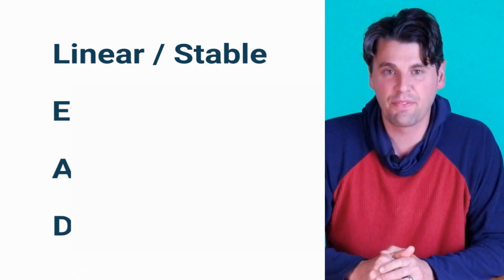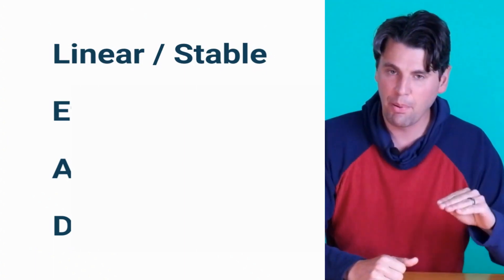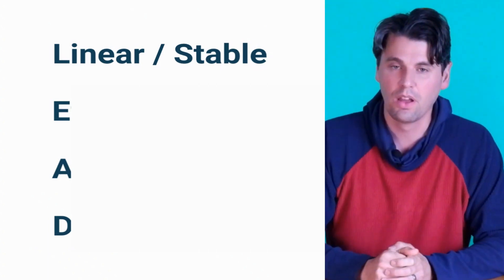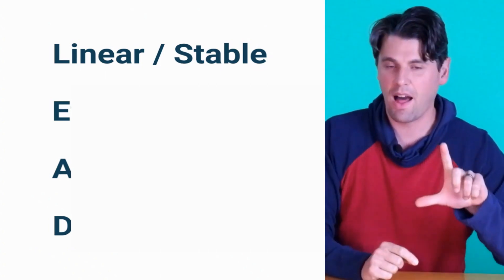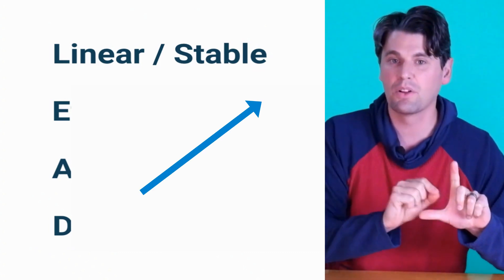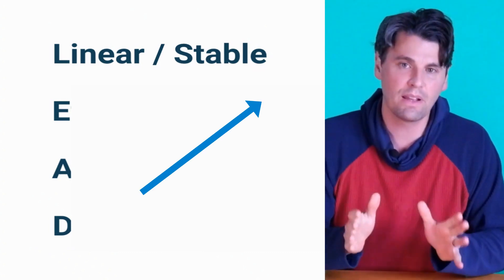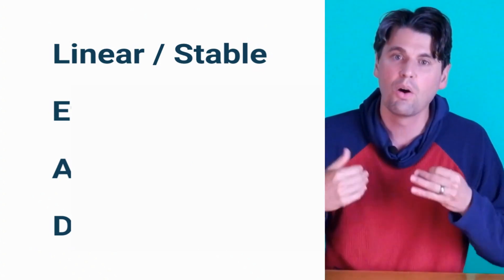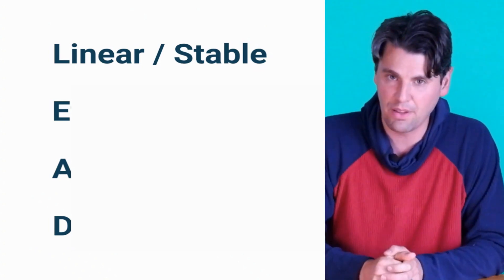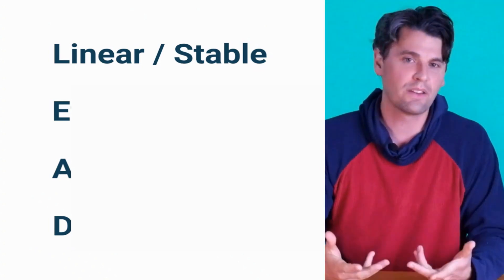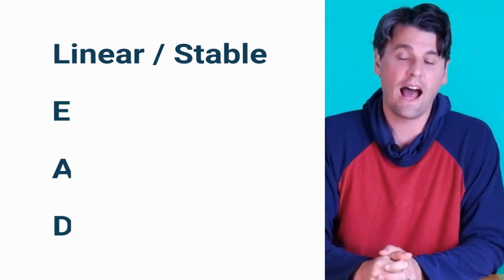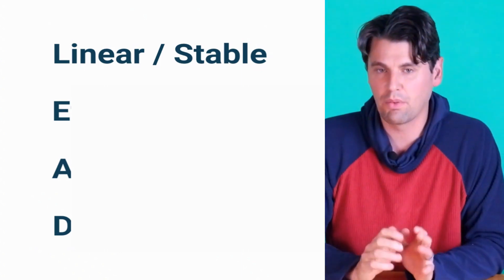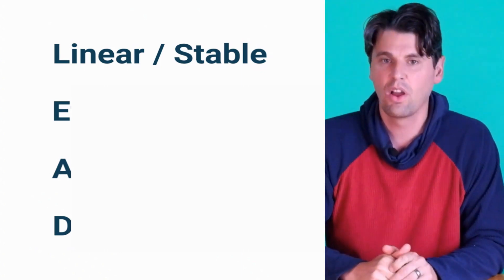Linearity is a fancy way of saying if my input goes up by a factor of two, my output will also go up by a factor of two — a straight line on an input-versus-output plot. If we deposit twice as much x-ray energy in our detector, we'd like the signal we get out to be twice as much. We don't want the signal to saturate, where at a higher level the signal goes flat or down. So linearity is number one.